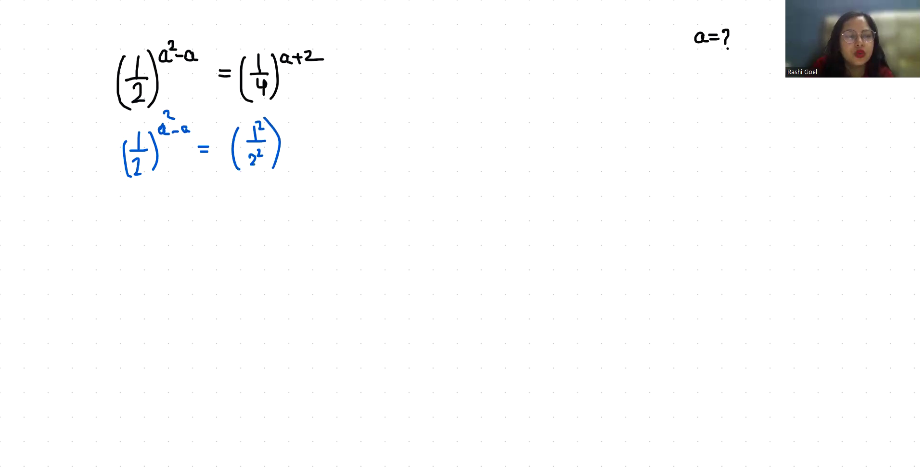So (1/2)^(a²-a) equals, I can write it as (1/2)^(2^(a+2)). According to exponent rule a^(m^n), I can write it as a^(mn).